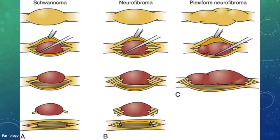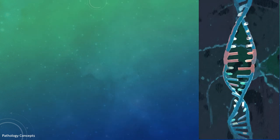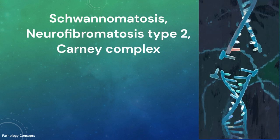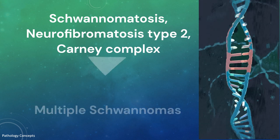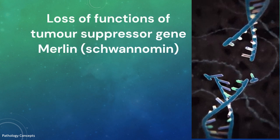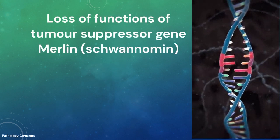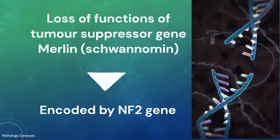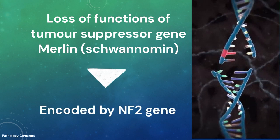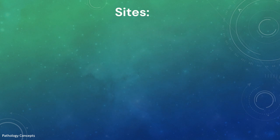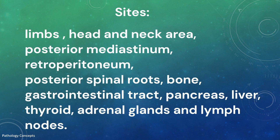Schwannoma is the most common type of peripheral nerve tumor in adults. Certain genetic conditions like schwannomatosis, neurofibromatosis type 2, and Carney complex are associated with multiple schwannomas. The cause is the loss of function of tumor suppressor gene merlin, also called schwannomin, the protein encoded by the NF2 gene. It has a unique histologic pattern.